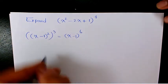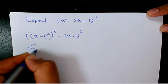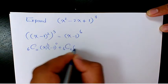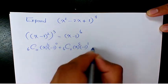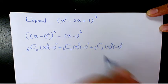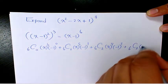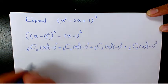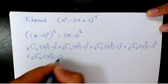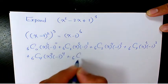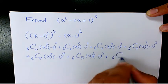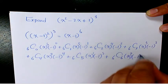The way we expand it is going to be 6C0 x to the power of 6 negative 1 to the power of 0 plus 6C1 x to the power of 5 negative 1 to the power of 1 plus 6C2 x to the power of 4 negative 1 to the power of 2 plus 6C3 x to the power of 3 plus 6C4 x to the power of 2 negative 1 to the power of 4 plus 6C5 x to the power of 1 negative 1 to the power of 5 plus 6C6 x to the power of 0 negative 1 to the power of 6.